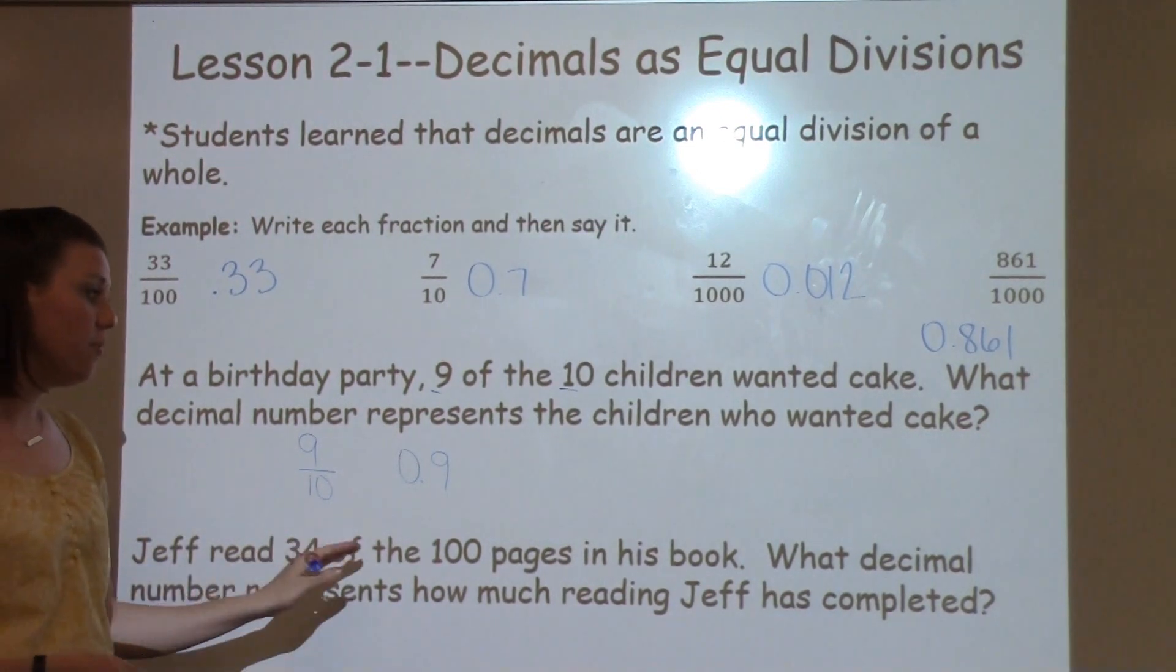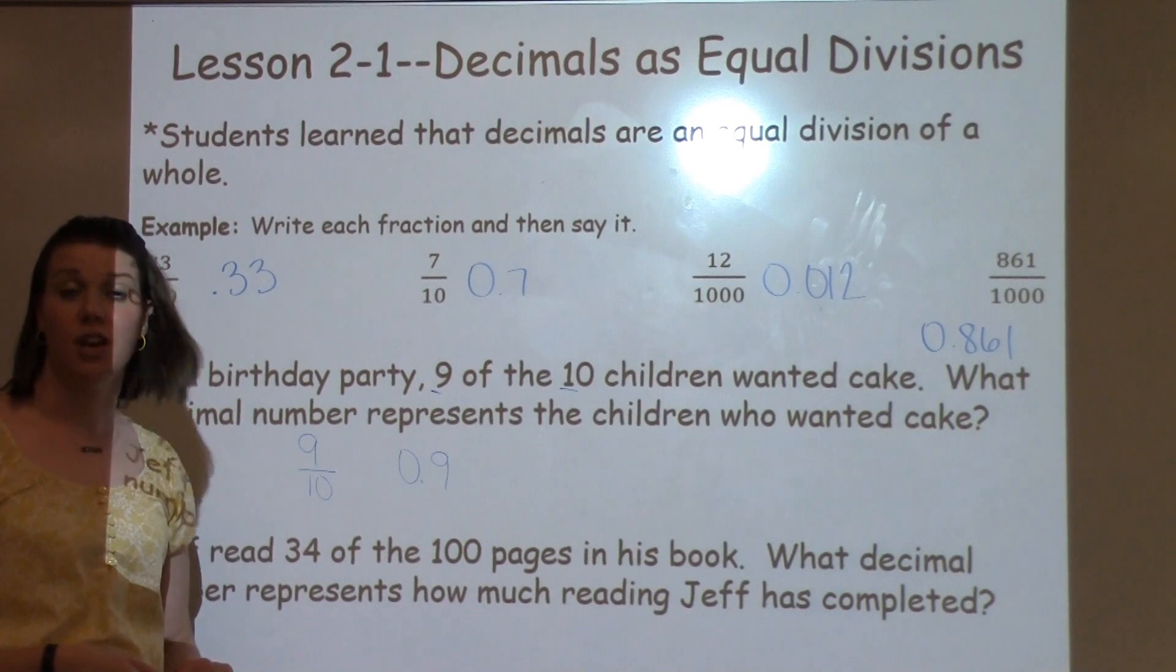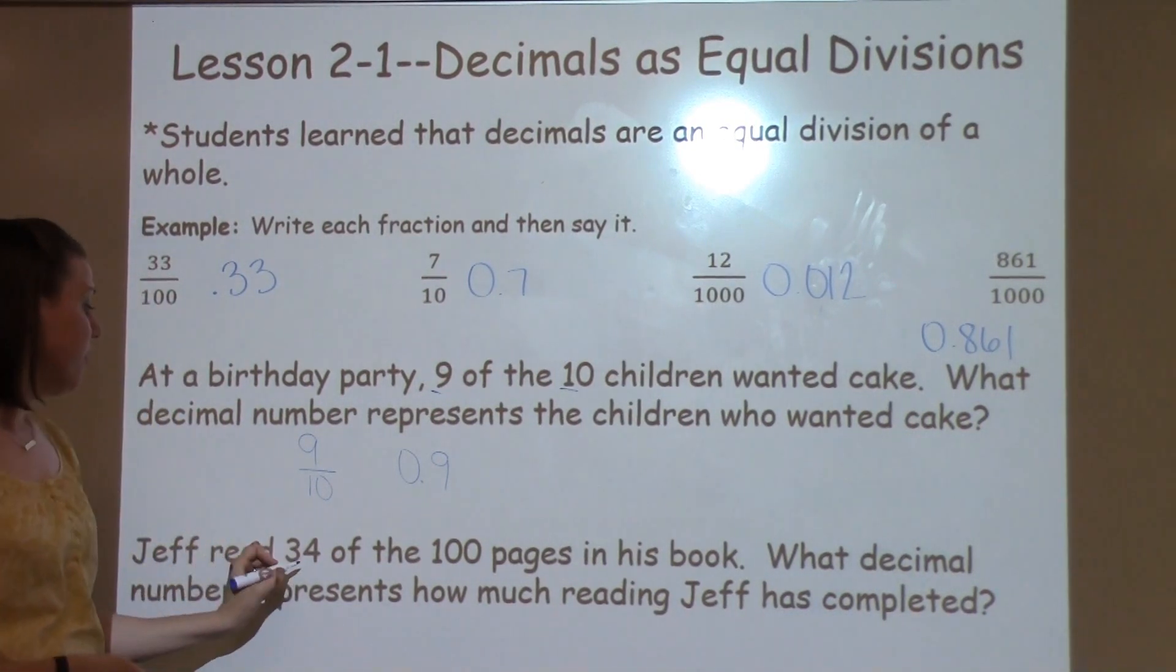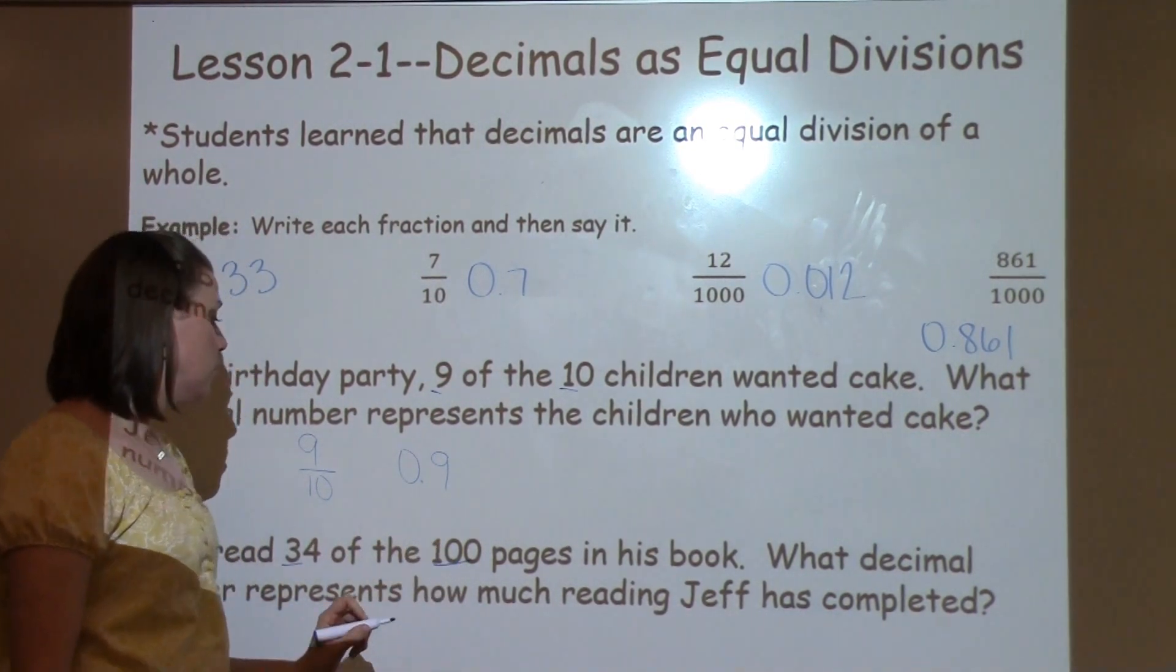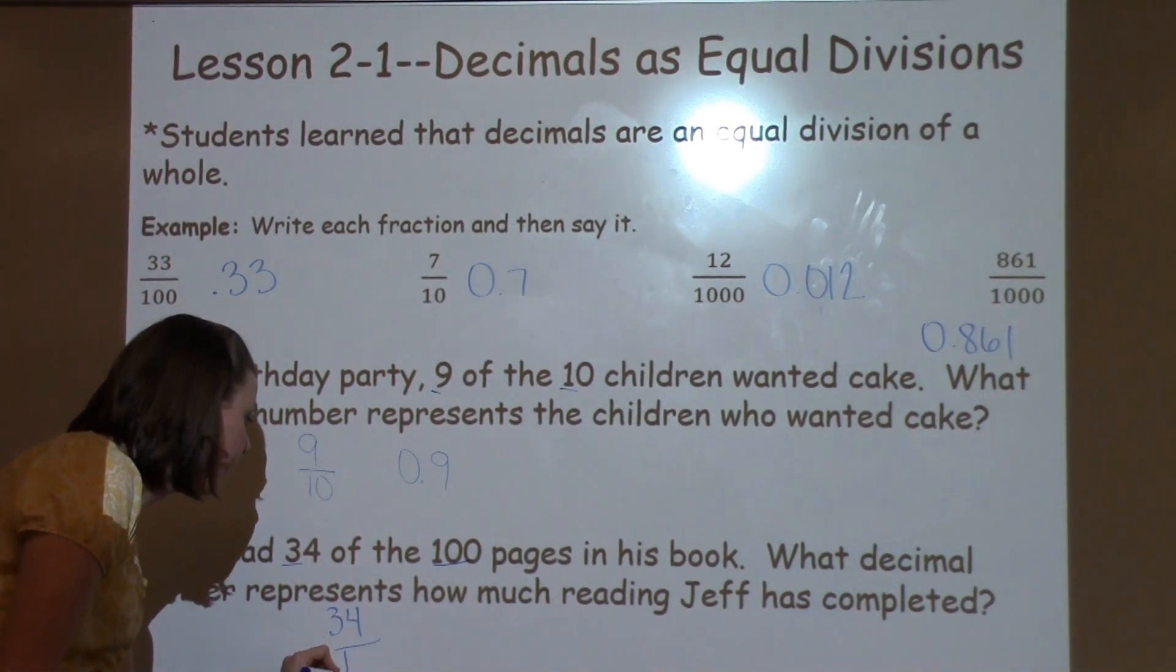Jeff read 34 of the 100 pages in his book. What decimal number represents how much reading Jeff has completed? So I know that Jeff has read 34 out of the 100. So I'm going to write that as a fraction. 34 out of my 100.